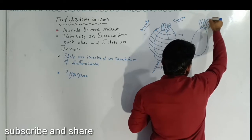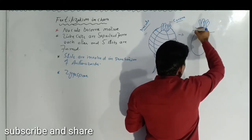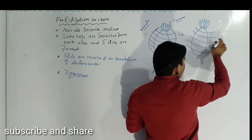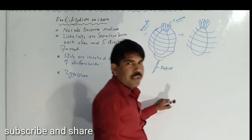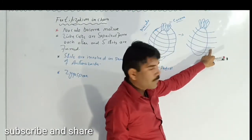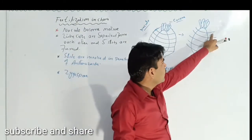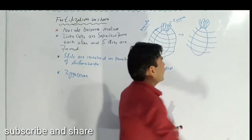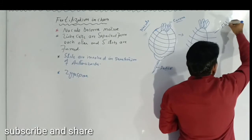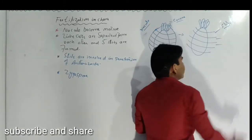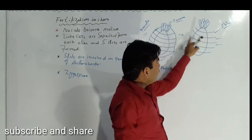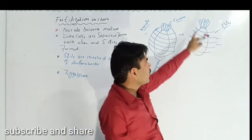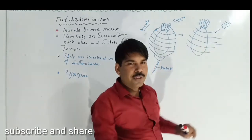These are the coronal cells, and now you can see these openings are formed — it means these tube cells are separated from each other and these openings, known as slits, are formed. These are the portions or slits or openings through which the male antherozoids can enter and fertilize the oosphere.